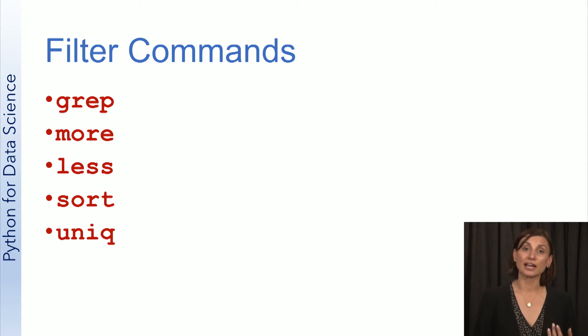Grep will search for lines with a given string or look for a pattern in a given input stream. More, as you've seen, will show you as much as fits in your shell window, and similar to less. Sort will sort lines alphabetically or numerically in your input stream, and uniq will give you the unique lines in your input stream.